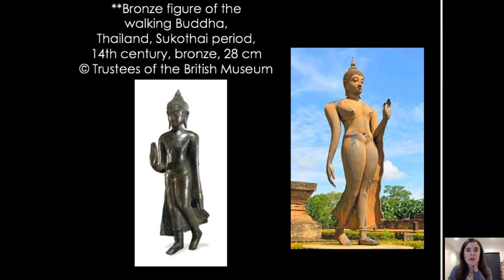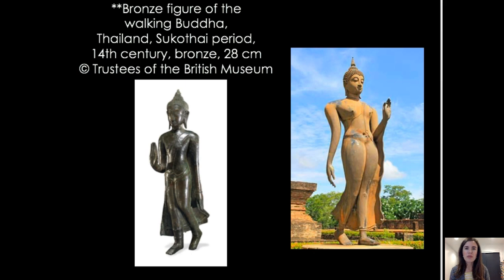Moving into Thailand — we're going to focus on the Sukhothai Walking Buddha, which is a very distinct style compared to India. In Thailand the idea of kingship was slightly different than in Cambodia and the Mughal Empire. In the Mughal Empire the emperors were very untouchable, somewhat similar in Cambodia, but in Thailand the rulers were somewhat more earthly and connected to the people, walking amongst them. So you have this emphasis on rulers that are more earthly and also a Buddha that is more earthly and connected to the people. This is a bronze figure of the Buddha currently in the British Museum dating to the 14th century.